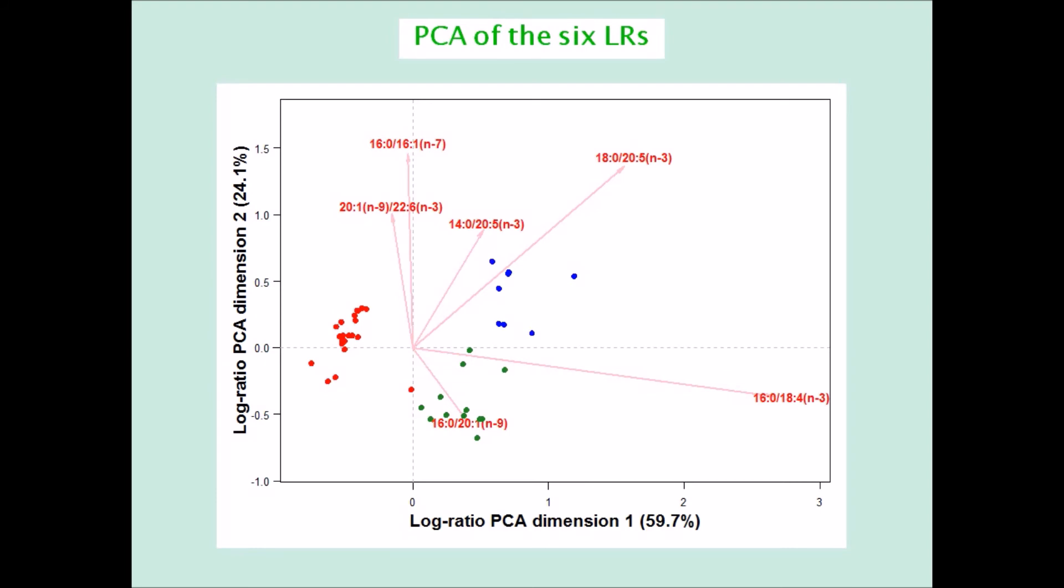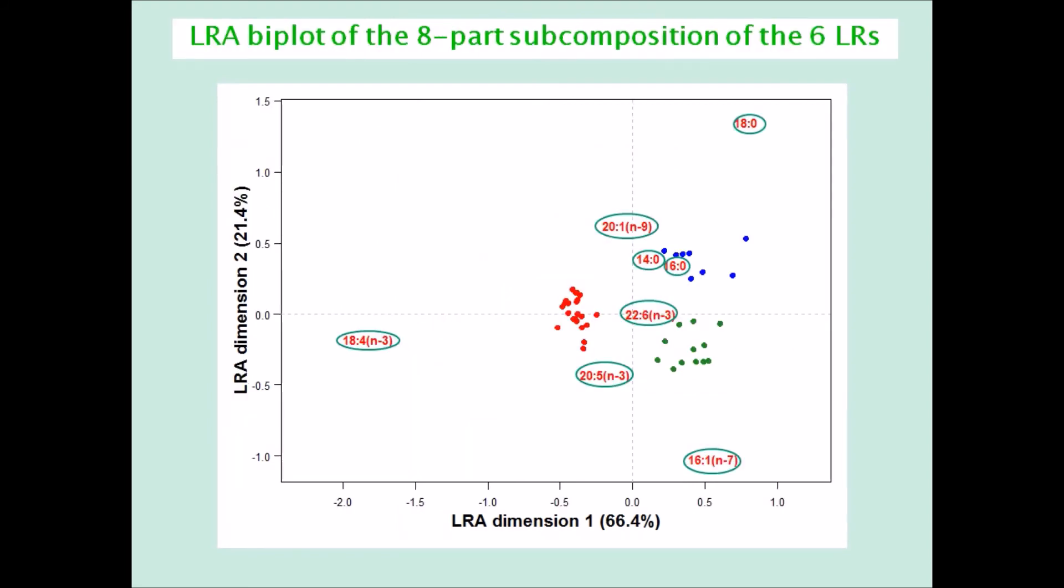These six ratios involve eight fatty acids. So another option is to take the eight-part subcomposition and do a log ratio analysis of the subcomposition. The six chosen ratios are just the edges connecting the corresponding fatty acids, for example, the first two, and then the other four ratios.